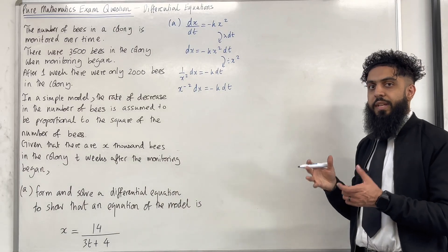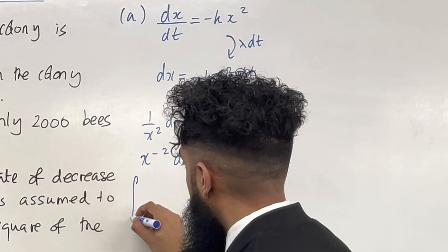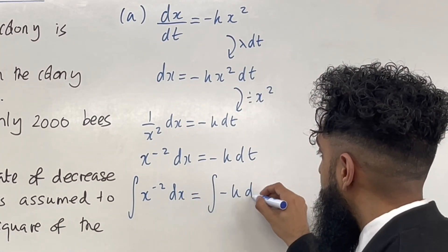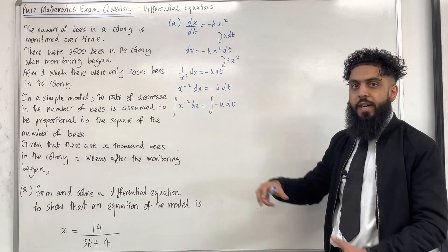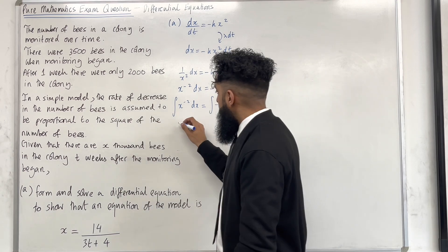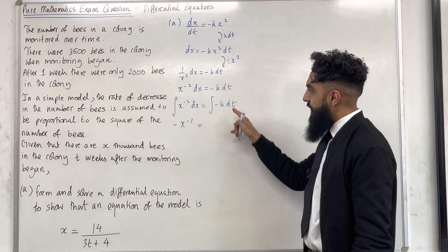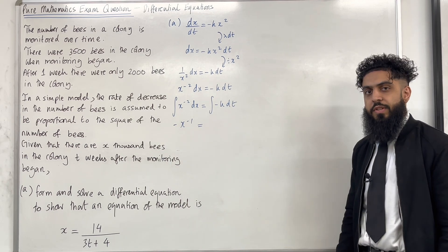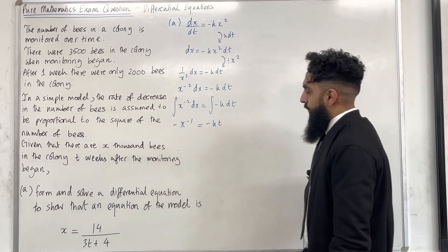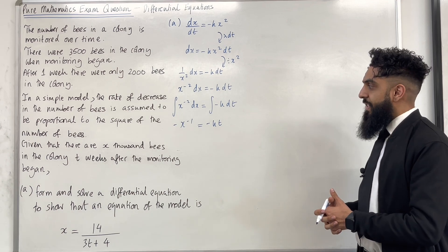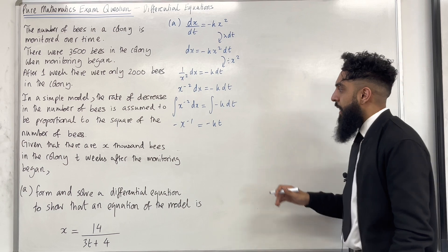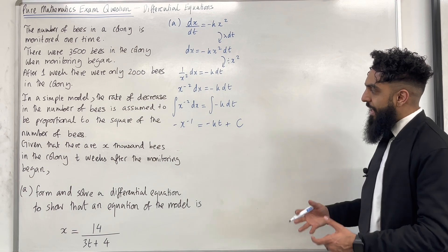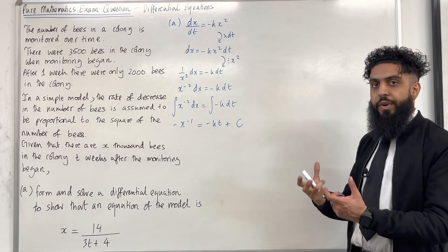I've separated the variables and now I can integrate both sides. The integral of x to the power minus 2 with respect to x has to equal the integral of minus k with respect to t. Over here we can add 1 to the power divided by the new power, giving minus x to the power minus 1. We're going to integrate the constant minus k with respect to t; because it's a constant we can simply write minus kt. When we solve differential equations, for simplicity we keep the constant of integration on the right-hand side, so we've got plus c.